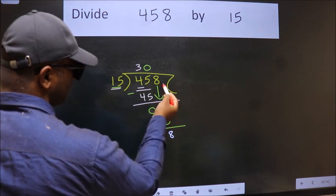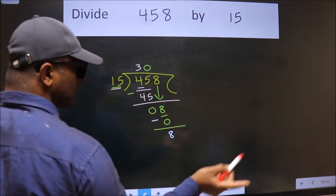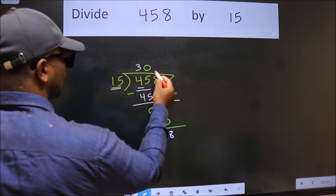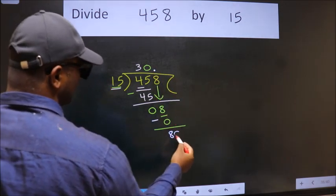Over here we did not bring any number down, and 8 is smaller than 15. So now we can put dot and take 0.